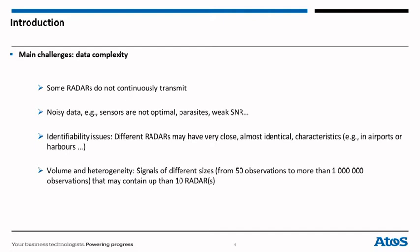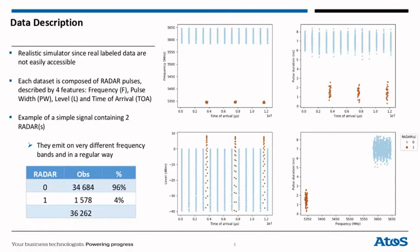And the last, the volume and the heterogeneity of the data. We have signals of different sizes, from 50 observations to more than 1 million observations, that may contain less than 10 radars.